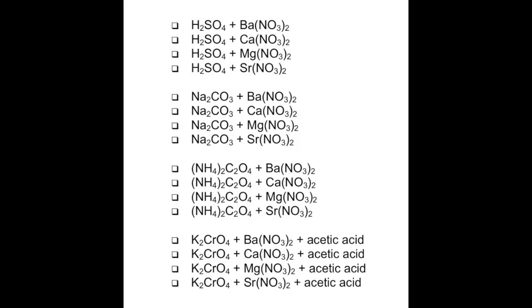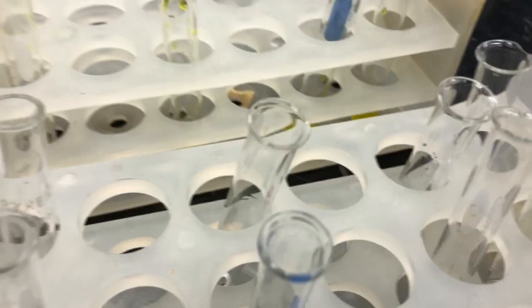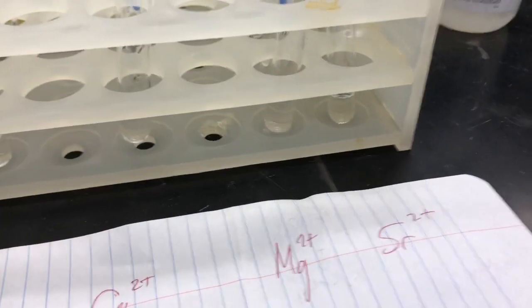Starting with the Group 2A cations, we will be adding reagents to each one of those ions that could potentially form precipitates with the cations, as shown here. We will first begin by arranging all of our precipitating agents in a test tube rack, and then we will take each one in turn and add it to each one of the cations one at a time.